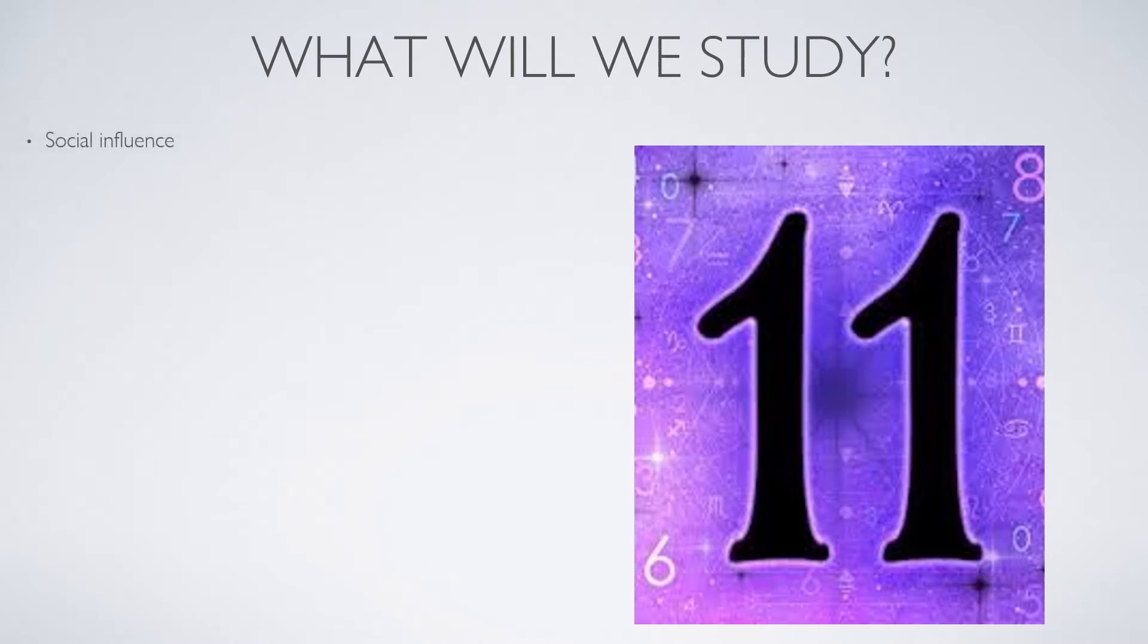Just to give you a really quick rundown of the 11 topics that we study across the two years. We look at social influence, which is about obedience and conformity. We look at memory and the different types of memory that we have and theories and models of memory, and we apply that to eyewitness testimony in real life. In attachment, we look at the bond that's made between a very young child and their primary caregiver and the consequences of that for them later in life and their later relationships.